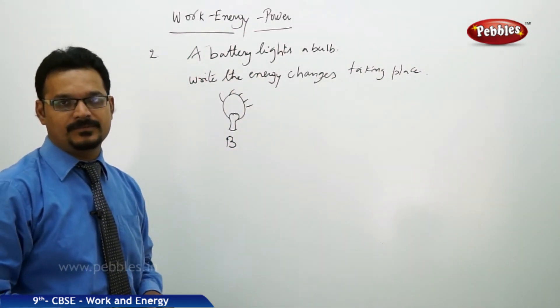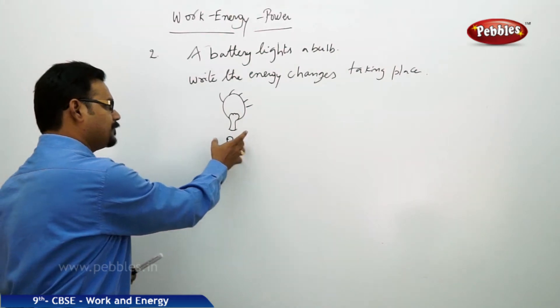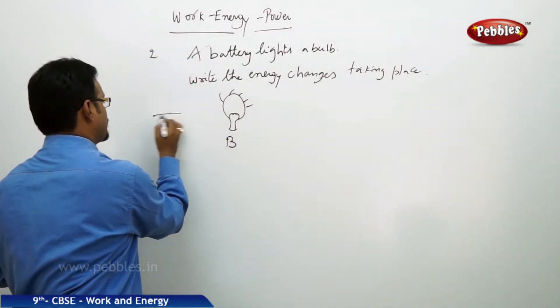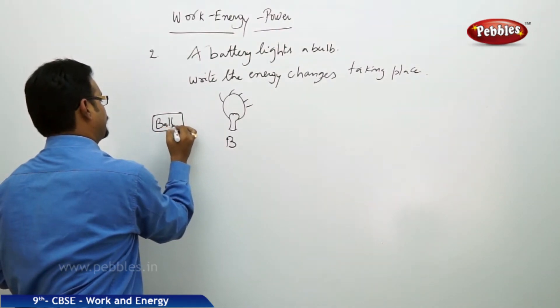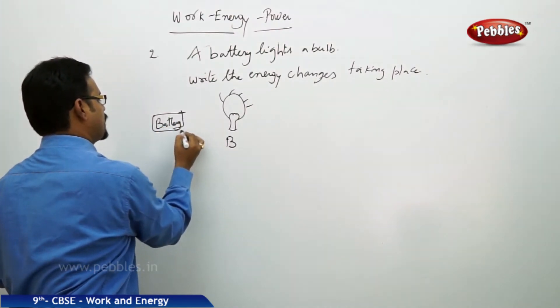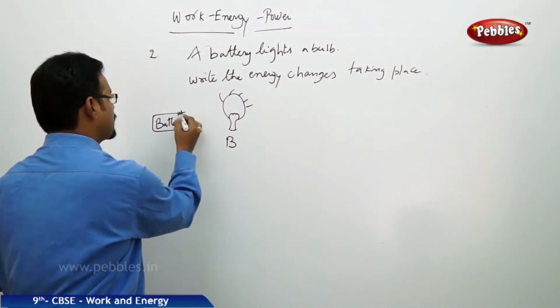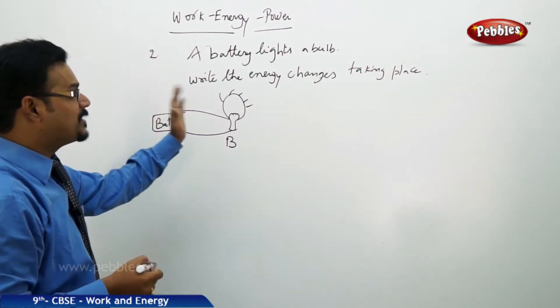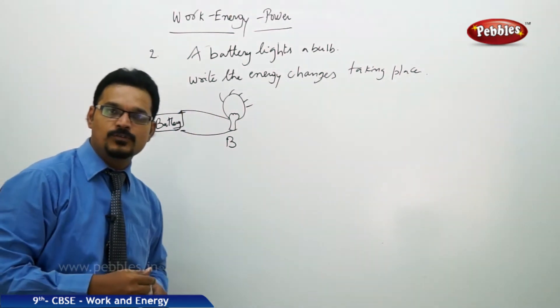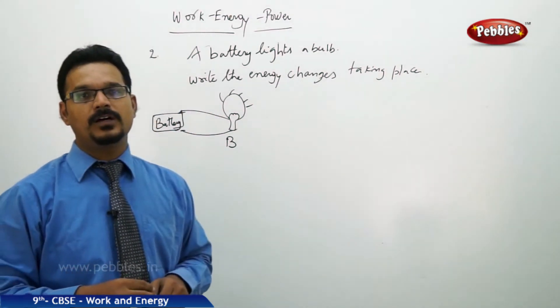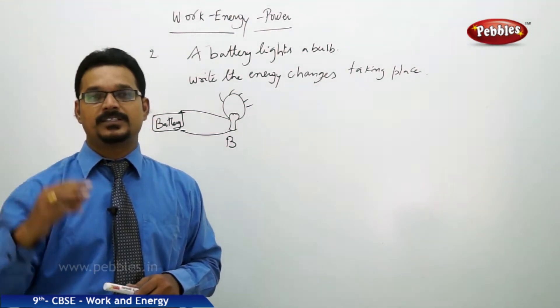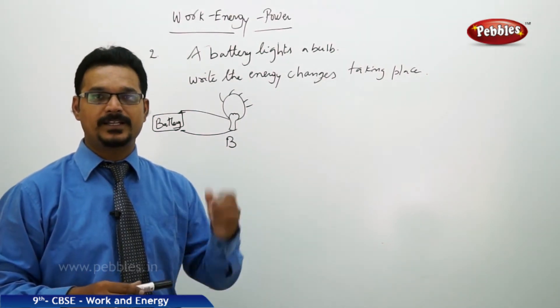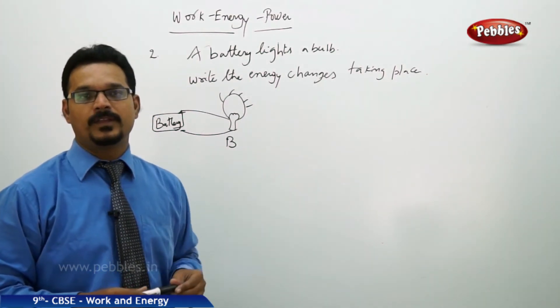The next problem for you: a battery lights a bulb. You need to write the energy changes taking place. This is the bulb connected to the battery. The battery has two terminals and is connected to the bulb. Generally you know that when you have the bulb connected to the ceiling and switch on from the main board, the lights glow.